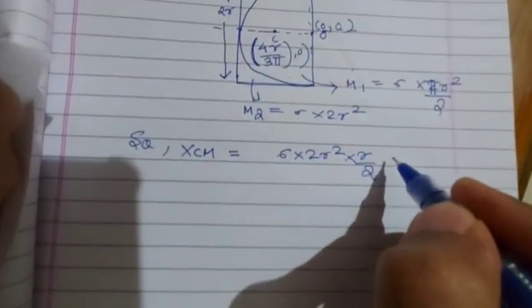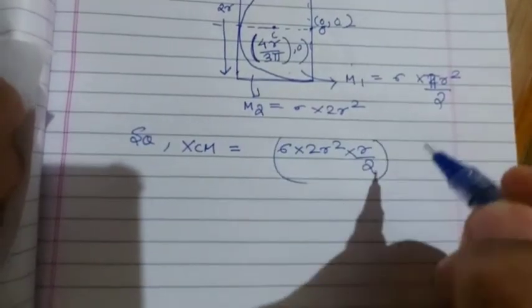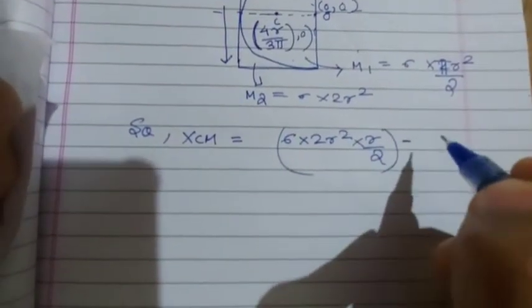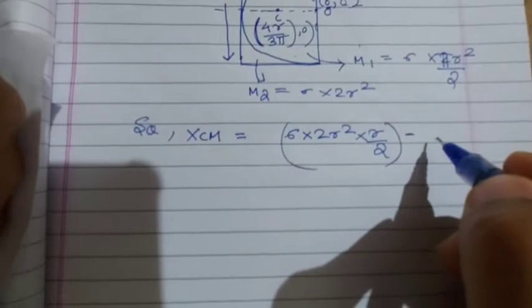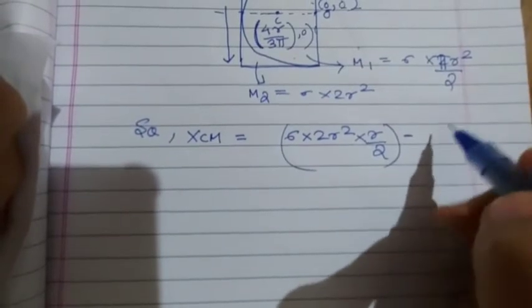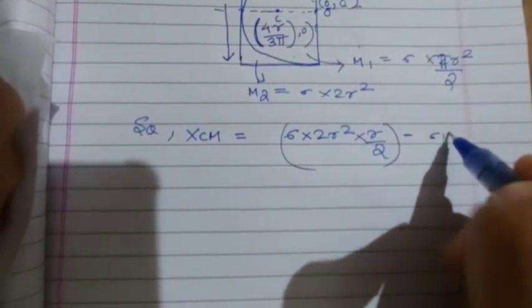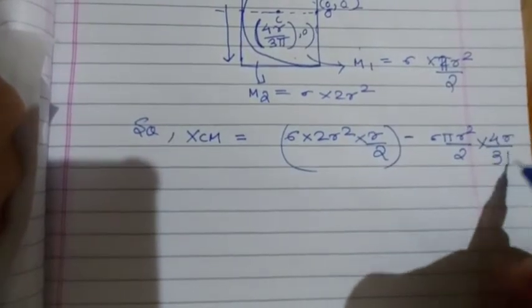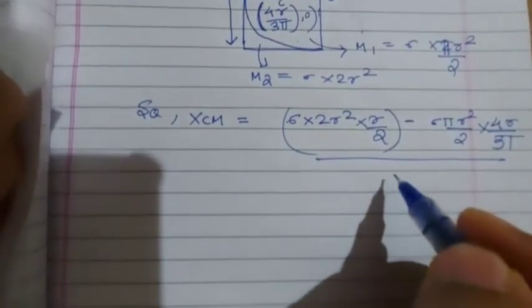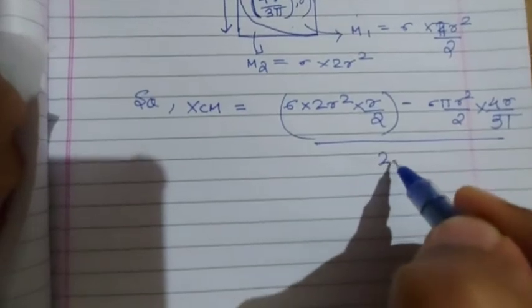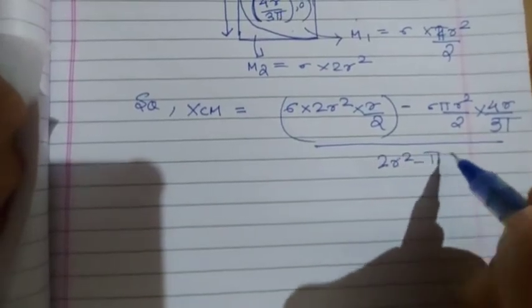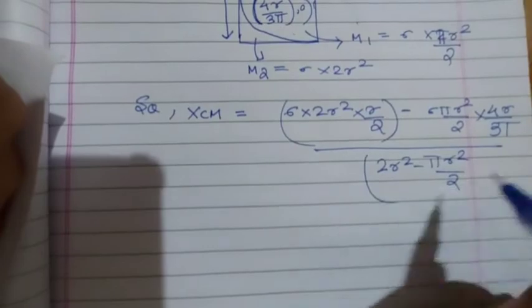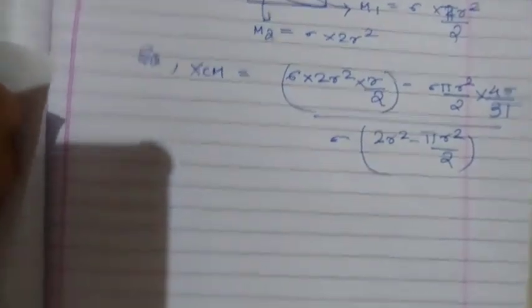As the semicircular plate is removed, we consider it as a negative mass. So minus σπr²/2 times 4r/3π, all upon 2r² minus πr²/2. The σ we take out as common.